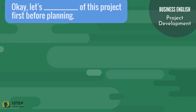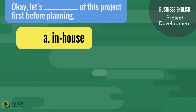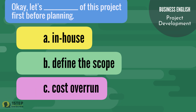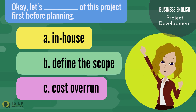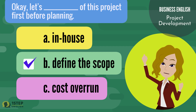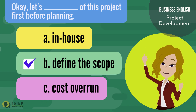Next question: 'Okay, let's ___ this project first before planning.' The correct answer is: define the scope. 'Okay, let's define the scope of this project first before planning.'